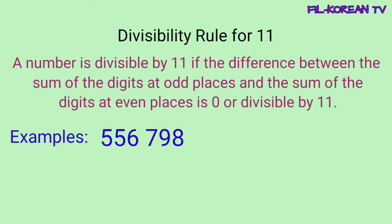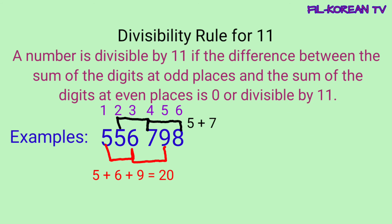556,798 — ang gagawin natin ay kukunin natin yung total ng digits na nasa odd places. 5 plus 6 plus 9 equals 20. Then, kunin naman natin yung sum ng digits na nasa even places: 5 plus 7 plus 8 equals 20. I-minus natin itong dalawa: 20 minus 20 equals 0. Dahil 0 yung difference nila, yung given number na 556,798 ay divisible by 11.